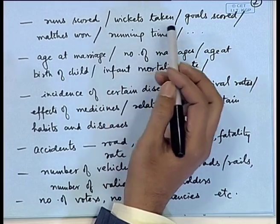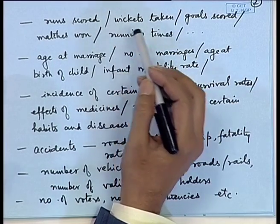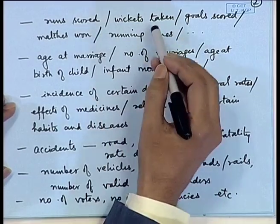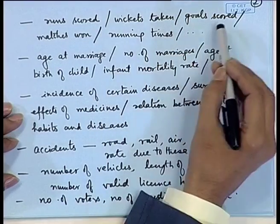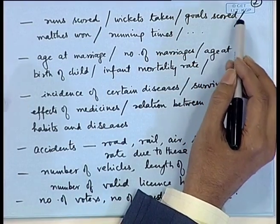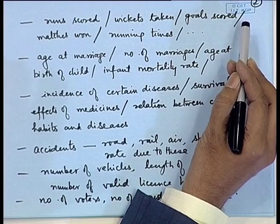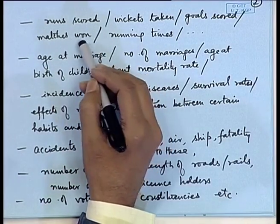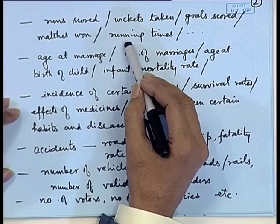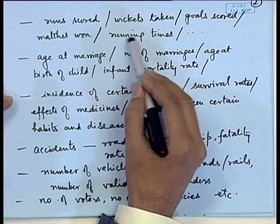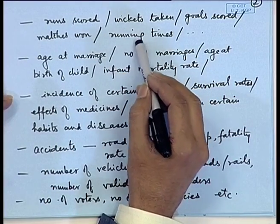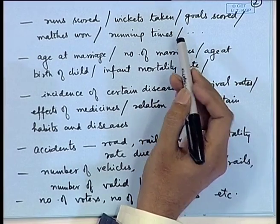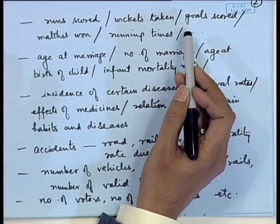Statistics are kept in areas such as sports, where we keep records of the runs scored by players, wickets taken in a cricket match. In a football or hockey match, how many goals are scored and how many matches are won by different teams. In athletics, what are the running times of the top athletes for certain events such as the 100 meter or 200 meter race.